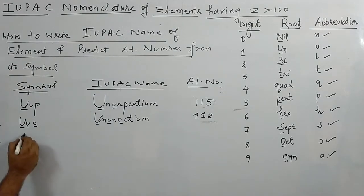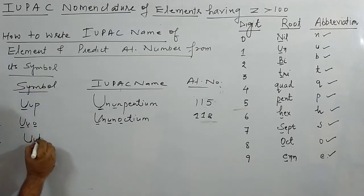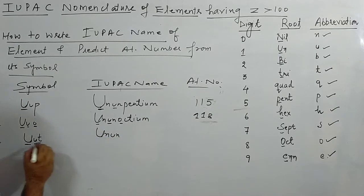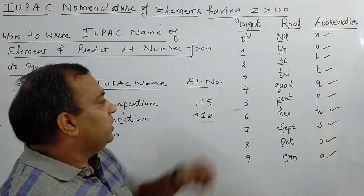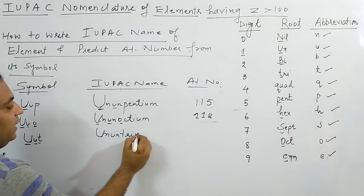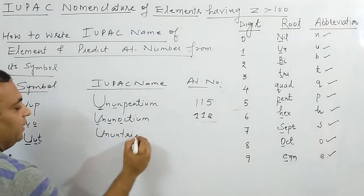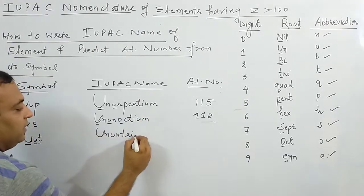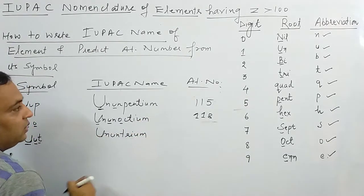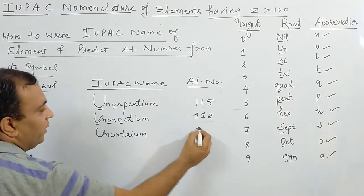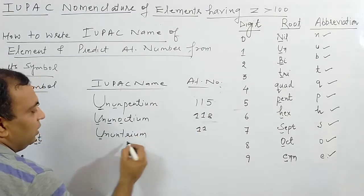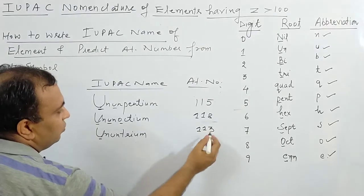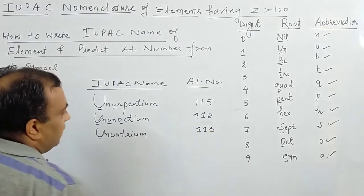Third reverse example: symbol UUT. U stands for un, again U stands for un, T stands for tri. The name becomes un-un-tri-ium, but since two consecutive i's appear, we drop one — giving IUPAC name Ununtrium. Atomic number: un → 1, un → 1, tri → 3. So atomic number is 113.